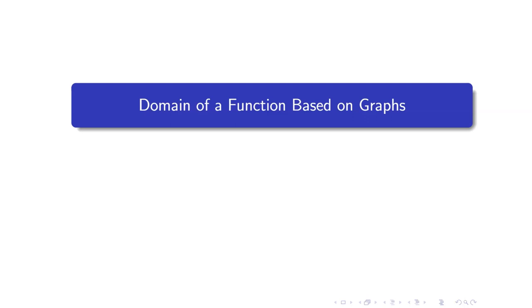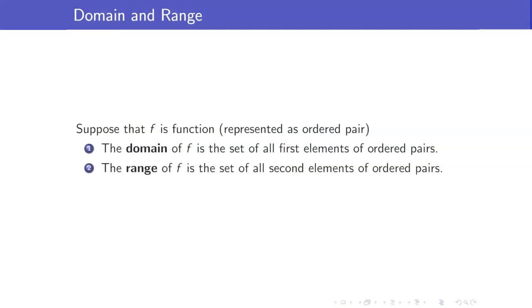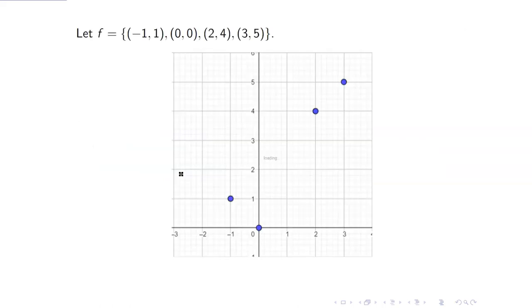In this lesson, I am going to discuss the domain of a function based on graphs. Suppose that f is a function represented as ordered pairs. The domain of f is the set of all first elements in the ordered pairs, and the range of f is the set of all second elements of ordered pairs.